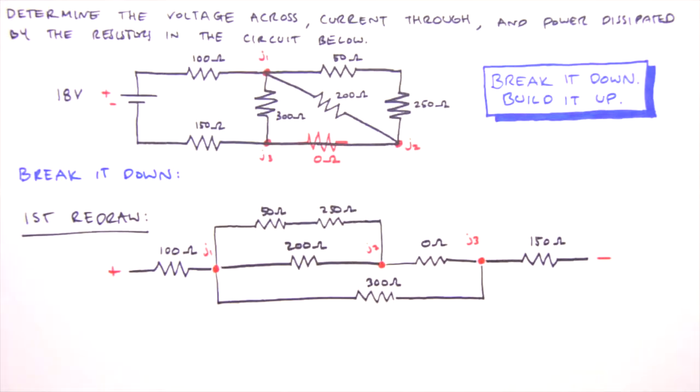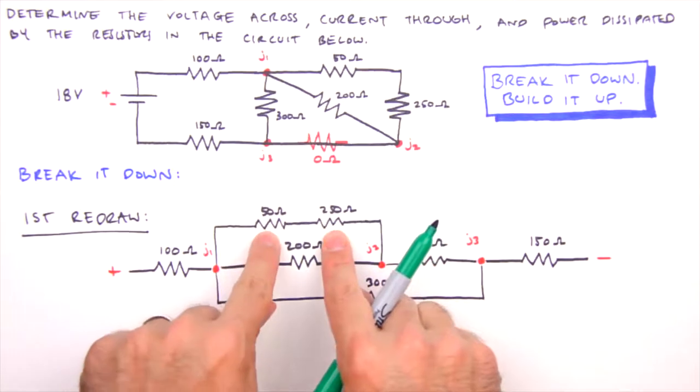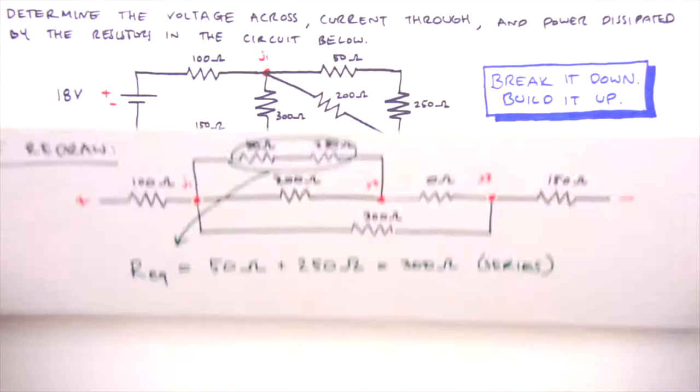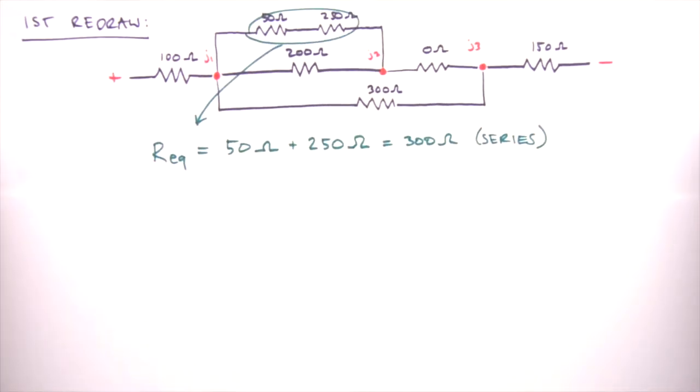We'll start with the resistors that are furthest from the battery and determine their equivalent resistance. So working inward from the positive and negative sides, we find that the 50 and 250 Ohm resistors fit the bill. If you're ever unsure where to start, resistors in series are always a good bet. So the equivalent resistance for these two resistors is 50 Ohms plus 250 Ohms, which equals 300 Ohms. This is how we calculate equivalent resistance for resistors in series. Simply sum their individual resistances.